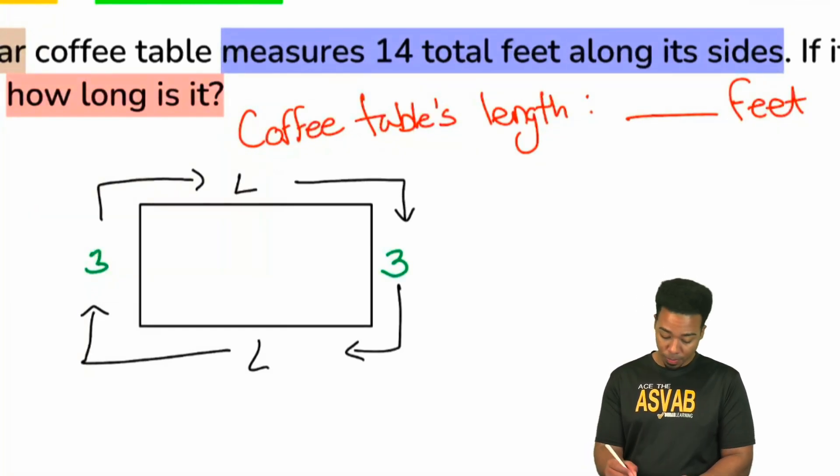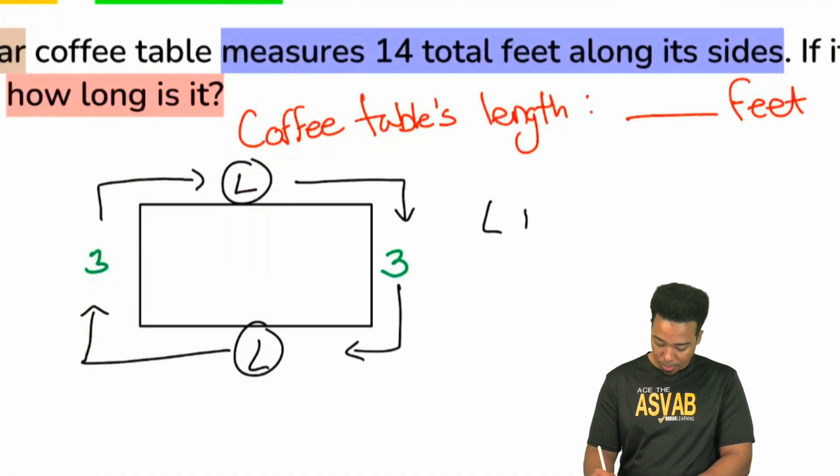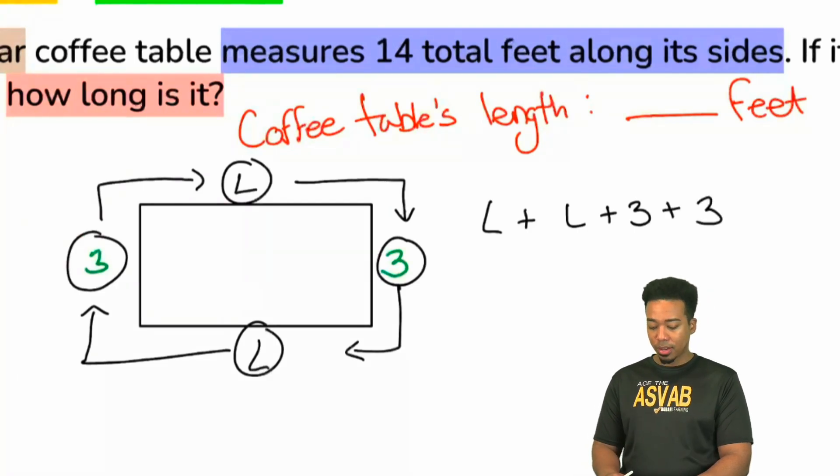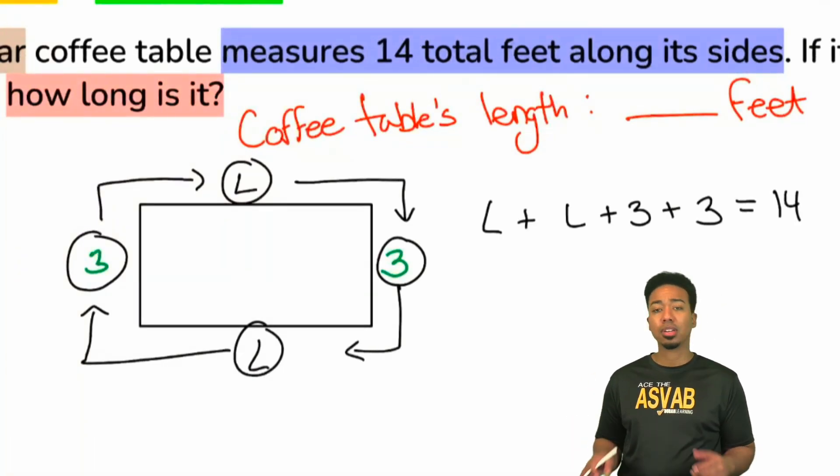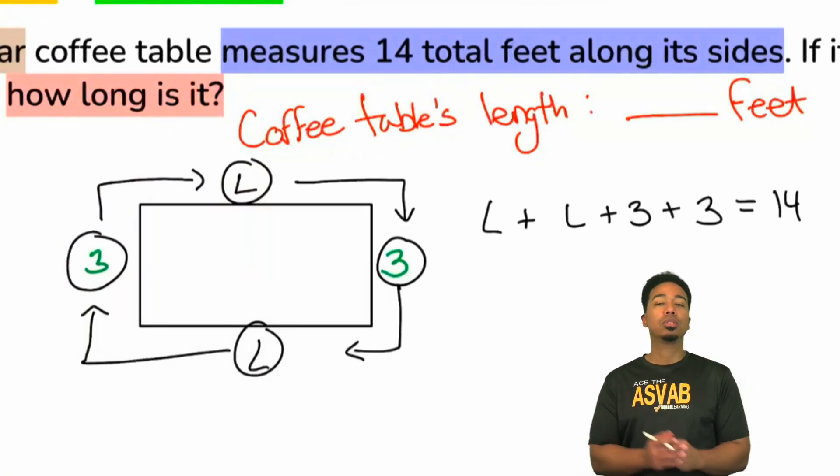So what we can show is, hey, this length right here plus the other length over here plus the three over there plus the three over there, that is going to total 14. That's going to total 14. Now this is just one of the many ways that we can solve this. I know quite a few of you in today's class might be able to solve this mentally, but we have to understand the reasoning behind what's going on. Because when we look at this like an equation, we can actually make more sense of it long term.